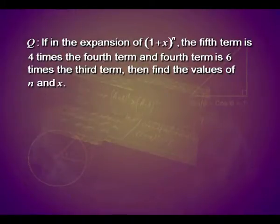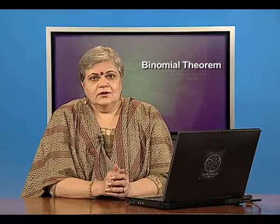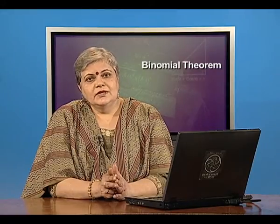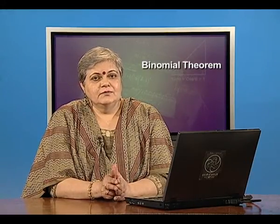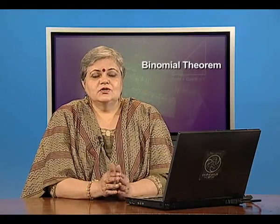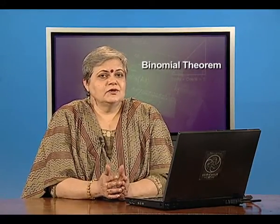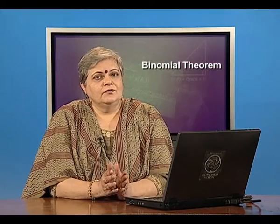If in the expansion of 1 plus x whole to the power n, the fifth term is 4 times the fourth term and the fourth term is 6 times the third term, then find the values of n and x. We are still talking about the expansion of 1 plus x raised to the power n and we have to find n and x — two unknowns. To find two unknowns, we must have two conditions, and they are given in terms of how the terms relate to each other.